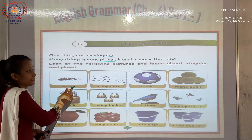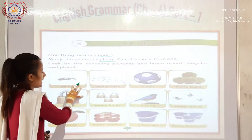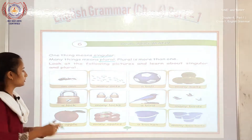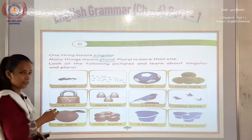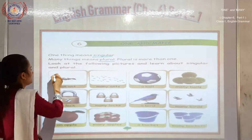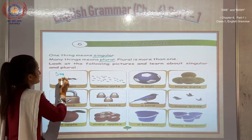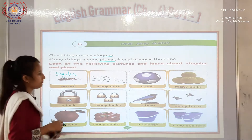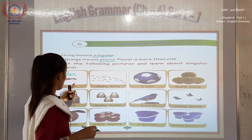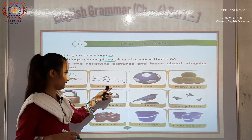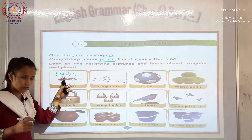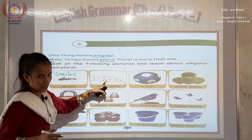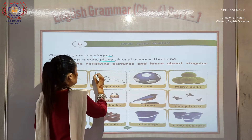Here are some examples. You can see there: singular and plural. This is an ant — yeh ek ant hai — so this is singular. And many ants. Ek ka matlab singular; ek se jyaadha, bohut jyaadha — this is plural.